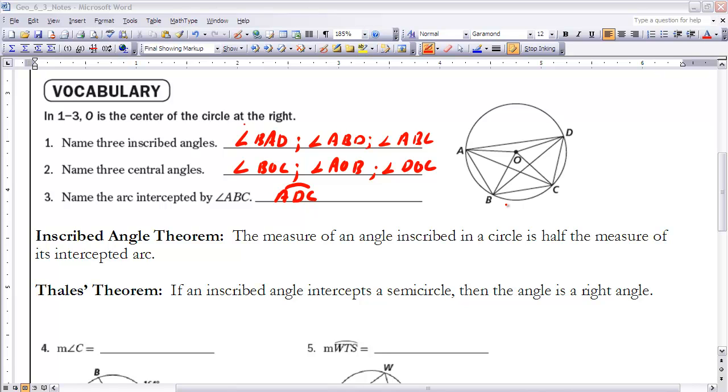Name the central angles. Remember what central angles are - central angles are any angle that has a vertex at the center point. So as long as O is your vertex point, you would have a central angle. I've named three of them here, but there are several more that you could name as well.